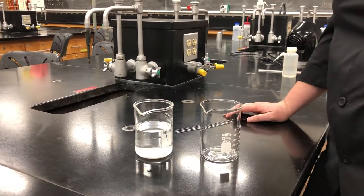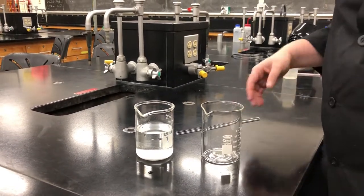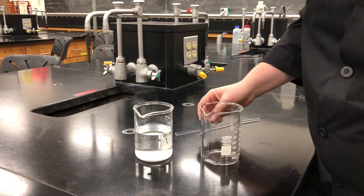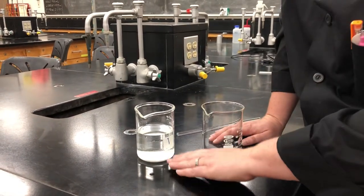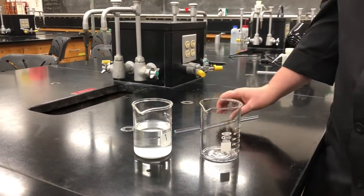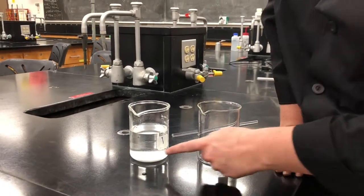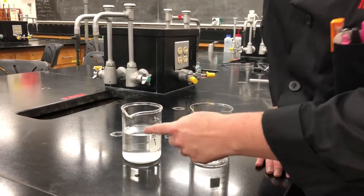Today we're going to talk about how to decant the supernatant liquid off of our solid precipitate. First, you want to make sure that you let your solid settle to the bottom as much as possible. The supernatant liquid is all of that excess liquid above it.